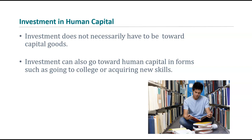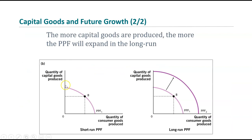Investment doesn't always have to be toward capital goods. It can be toward human capital — improving humans through education or skills formation. Investment can go toward human capital in forms such as going to college or acquiring new skills. That's what you're doing watching this video. You're spending time investing in acquiring new knowledge and skills, giving up money you could be making doing something else, in order to invest in human capital. Your goal is that tomorrow you'll be able to produce a lot more than you could today, and that the returns on that investment will be great.